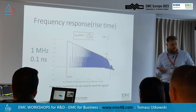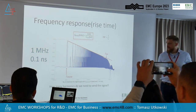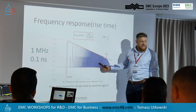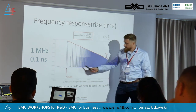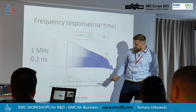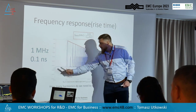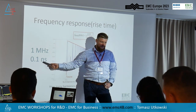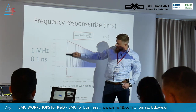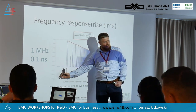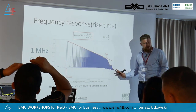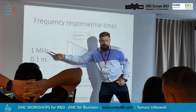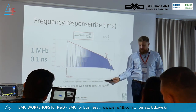When we've got digital signals — this is a literature example: we've got a 1 MHz square wave and 0.1 nanosecond rise time. Here is our operating frequency, 1 MHz. So how far does the spectrum go? When we've got 0.9 nanoseconds, how far from 1 MHz? Up to 2 gigahertz. Here we've got two gigahertz.